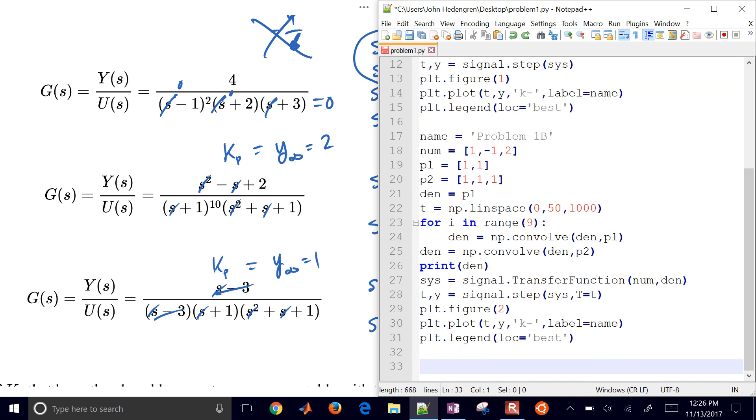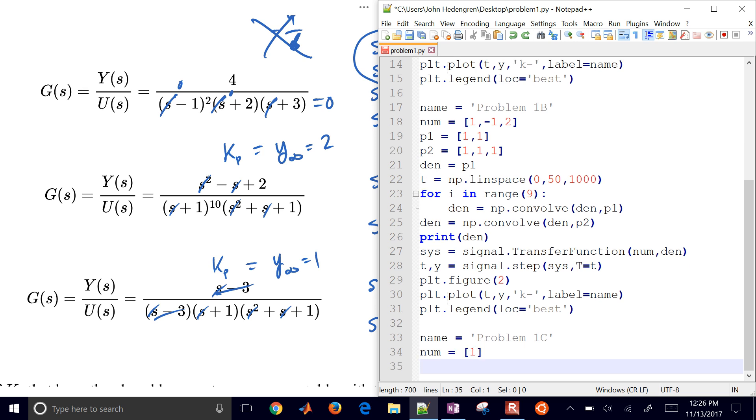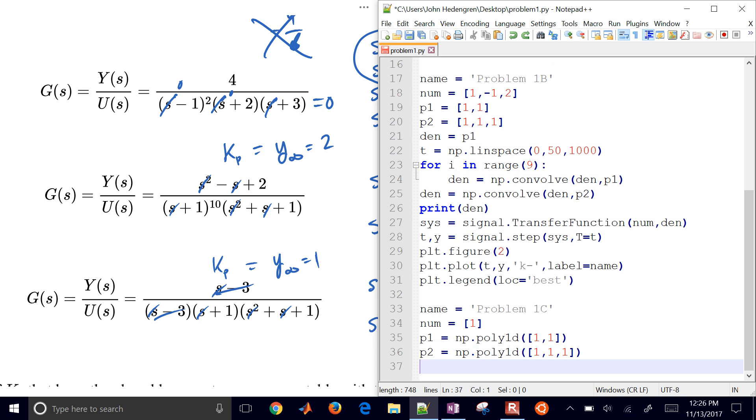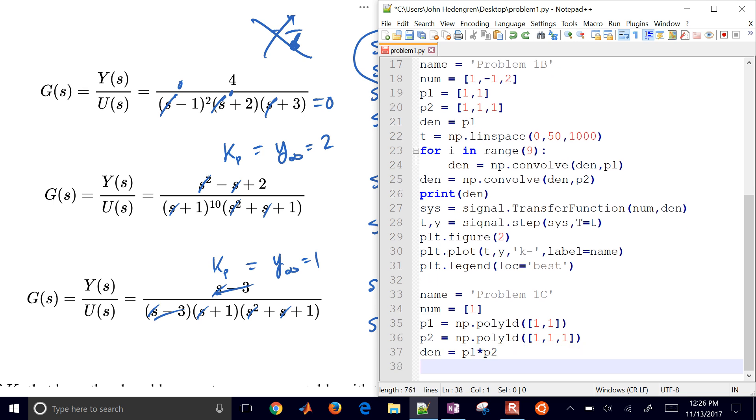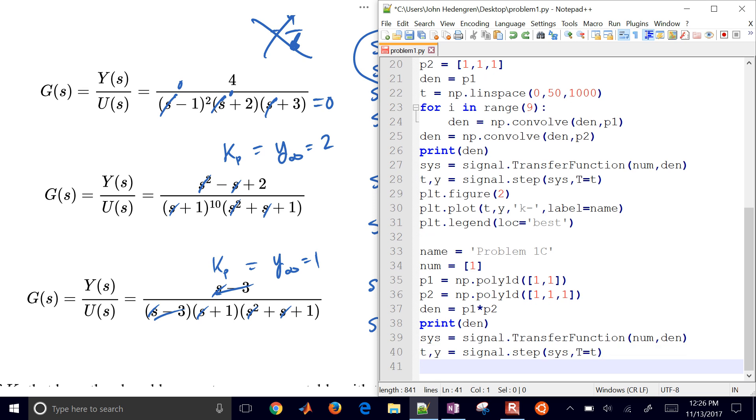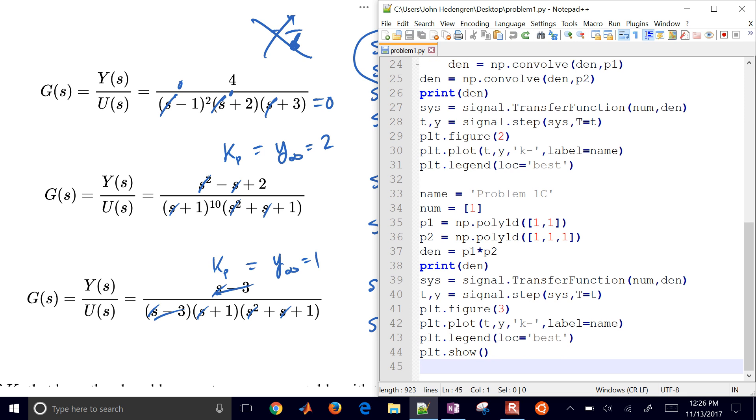Let's go on to problem 1b now, or 1c. And now this one's just going to be 1, and then I'll have the s plus 1, and then the s squared plus s plus 1. And I'll multiply those together, and create my transfer function, and I'll generate my step test, and then just plot it. So there is my final ones.